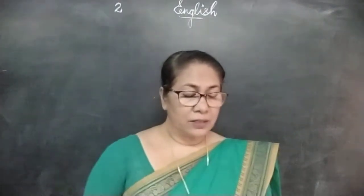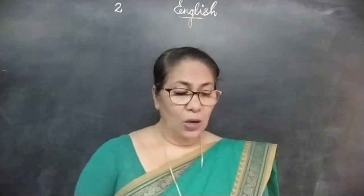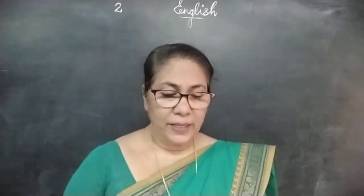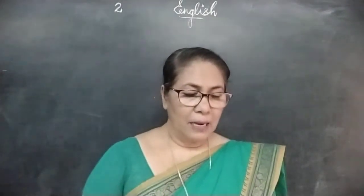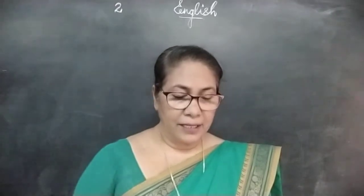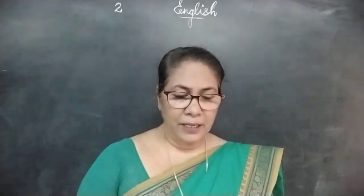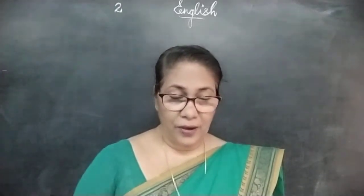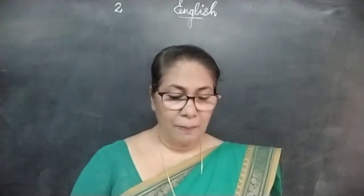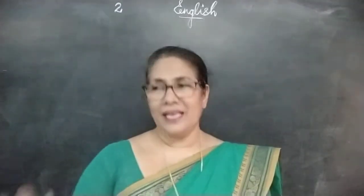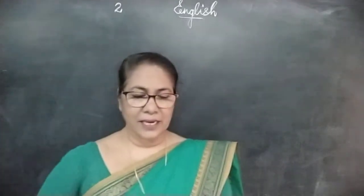Now moving on to the third number. Tom was a clever boy. Which sentence shows this? He helped other people in their work. He made other people think that painting the fence was fun. He got an apple, some marbles and a kite. B. Yes, B is the correct answer.